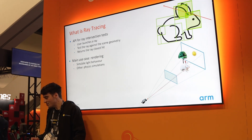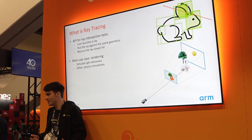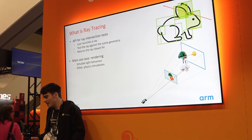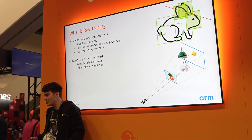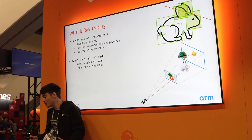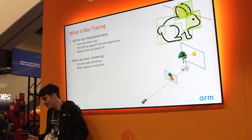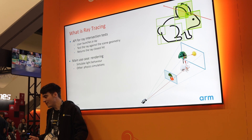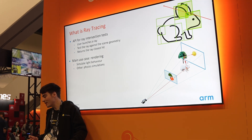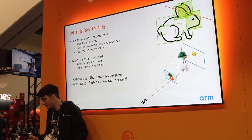The main use case of ray tracing is rendering. Ray tracing allows us to simulate the behavior of light in a way that simulates physical reality very closely. However, the Vulkan API for ray tracing is very flexible — you can get really creative. For example, you could use ray tracing to simulate particle collisions using a physics simulator. However, the main use case is rendering, and that is what we are going to focus on during this presentation.